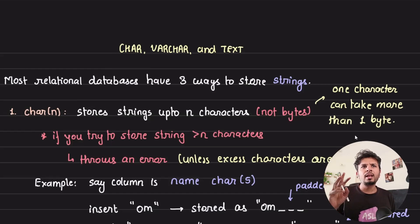Most relational databases have three ways to store string: char, varchar, and text.